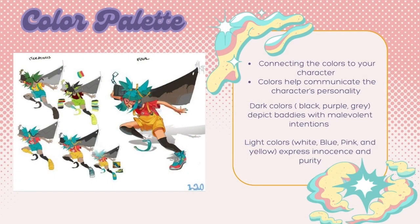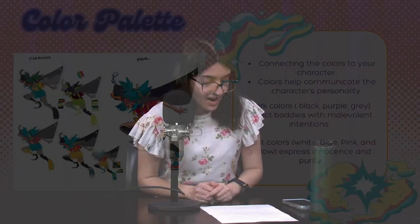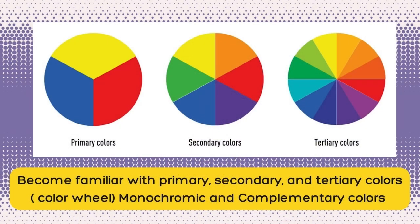Something to think about for your character is their color. So today we'll go over the color wheel. You want your character to connect with their colors. For darker colors, they're more associated with bad intentions and give out more of a darker vibe. As for lighter color palettes, you are expressing purity and innocence, giving them more of a friendly vibe. I want you to become familiar with your primary, secondary, and tertiary colors. It will be really helpful for you in the future as you create your own color palettes.